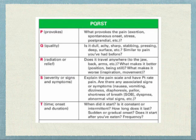S is for severity and associated symptoms - the pain scale rating, plus do they have nausea, vomiting, dizziness, diaphoresis, pallor, or shortness of breath? Are vital signs abnormal? T is timing, onset, and duration - when did it start, is it constant or intermittent, how long does it last? Is it worse after eating - which might suggest gastritis or an ulcer? Is it better when they don't eat? Is it worse after taking their medicine? These types of questions depend on the context of what you're evaluating.